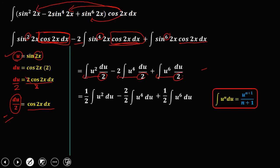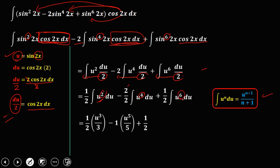Using the power rule — the integral of u to the power n du equals u to the power n+1 over n+1 — we get: one half times u to the power 3 over 3, minus 1 (since negative 2 over 2 equals negative 1) times u to the power 5 over 5, plus one half times u to the power 7 over 7, plus C.